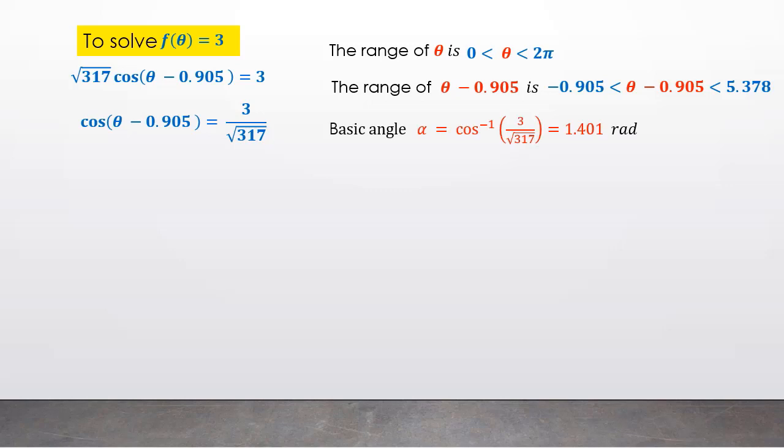We find the basic angle: θ - 0.905 = 1.401 radians. Since cosine is positive in the first and fourth quadrants, we have θ - 0.905 = 1.401 for the first quadrant and the corresponding fourth quadrant angle. This gives the final answers θ = 2.306 radians and θ ≈ 5.378 radians.